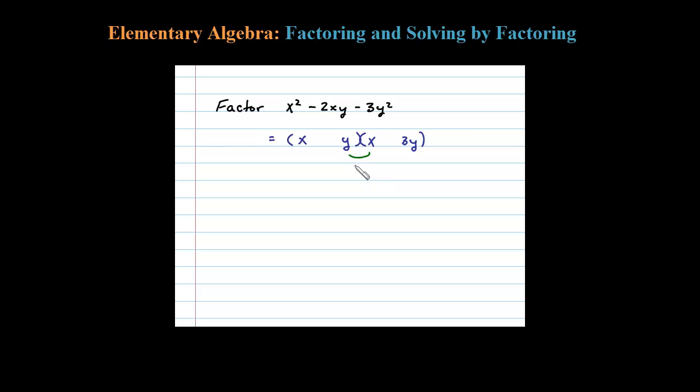The signs are gotten from the product of the inner terms, in this case xy, and the outer terms, 3xy. We have an xy and a 3xy that adds up to negative 2xy if the 3 is negative and the 1 is positive.